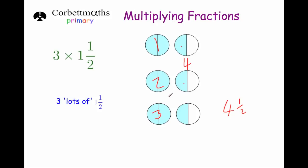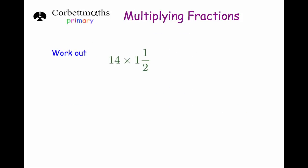At primary level, the mixed numbers you'll be asked to use won't be too complicated — things like 1 and a half, 2 and a half, 1 and a third. Here's an example: 14 times 1 and a half. A quick method is to do 14 times 1 and 14 times a half separately. 14 times 1 is 14, and 14 times a half is the same as half of 14, which is 7. Adding 14 and 7 gives 21. Remember, 14 times a half is the same as a half of 14.